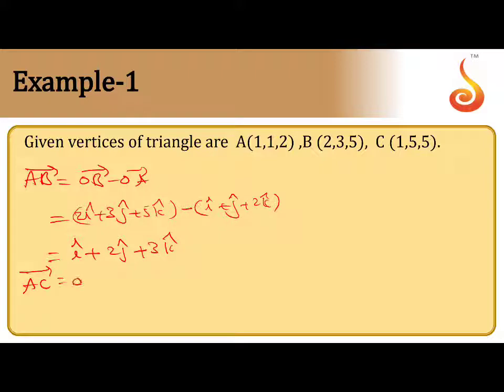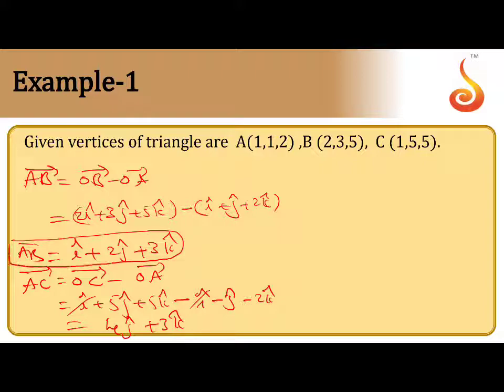The same manner you can find AC vector, OC minus OA. So, OC is i plus 5j plus 5k minus OA vector. So, minus off means directly i minus j minus 2k. So, finally you got i minus i, I cancel. 5j minus j, 4j. 5k minus 2k, that is 3k. You got it here. So, you got AB vector and you got AC vector also. Both the vectors you got it here.